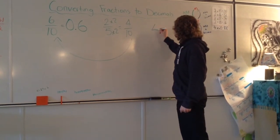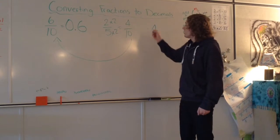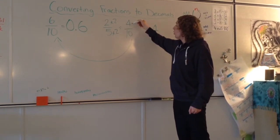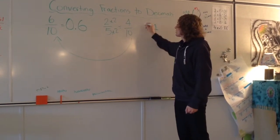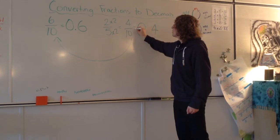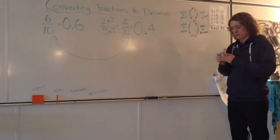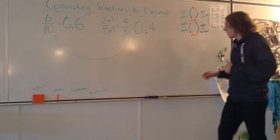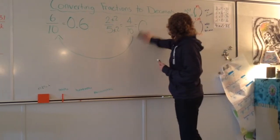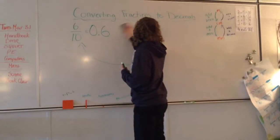So the 4 will go right over here. We don't have a whole number because this is a fraction, so we'll have zero wholes and four tenths. So it's as simple as that.